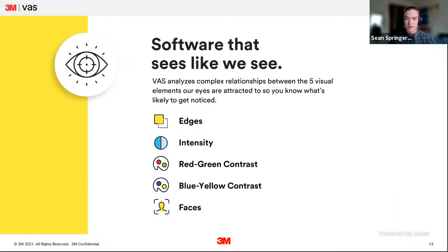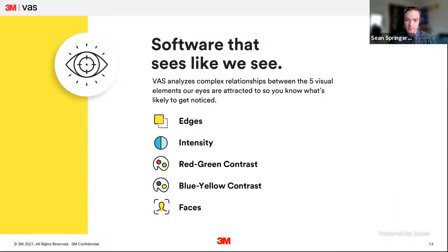Color contrast also shows up in two channels: red-green and blue-yellow. The choice of those specific channels is biological — that's actually the cones, the color receptors in our eyes, and the way the human brain processes color. Interestingly, a total lack of one of these colors will also show up as contrast for that color in our brains. Finally, there's an evolutionary basis for VAS recognizing faces — human beings are biologically programmed to respond to human faces.